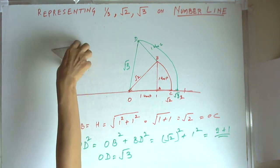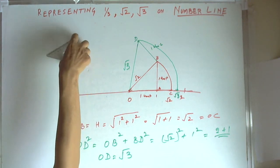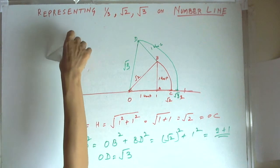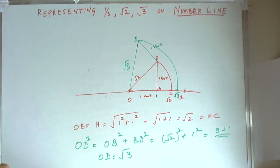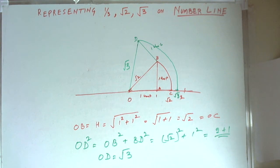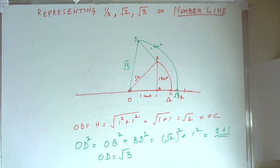In this video, what we have seen is that we can represent a non-terminating fraction like 1/3 and irrational numbers like square root of 2 and square root of 3 on the number line by geometrical construction. Thank you.